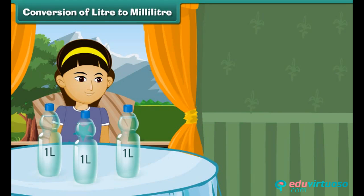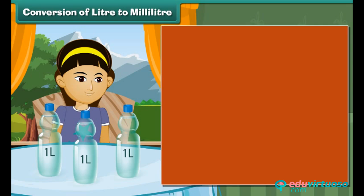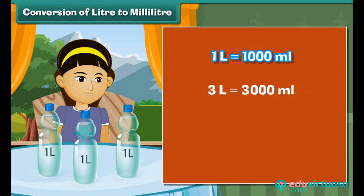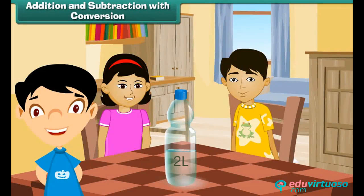Conversion of liter to milliliter: Sonam drinks 3 liters of water in a day. What is Sonam's water intake in milliliters? 1 liter is equal to 1000 milliliters. So 3 liters equals 3 into 1000, which is 3000 milliliters. Therefore, Sonam drinks 3000 milliliters of water in a day.